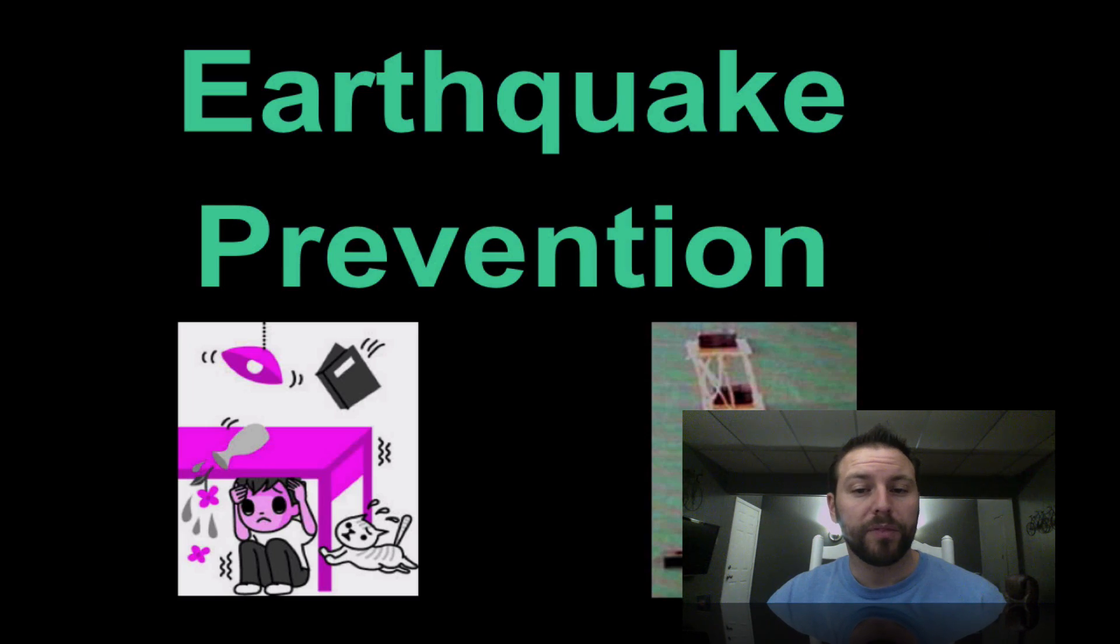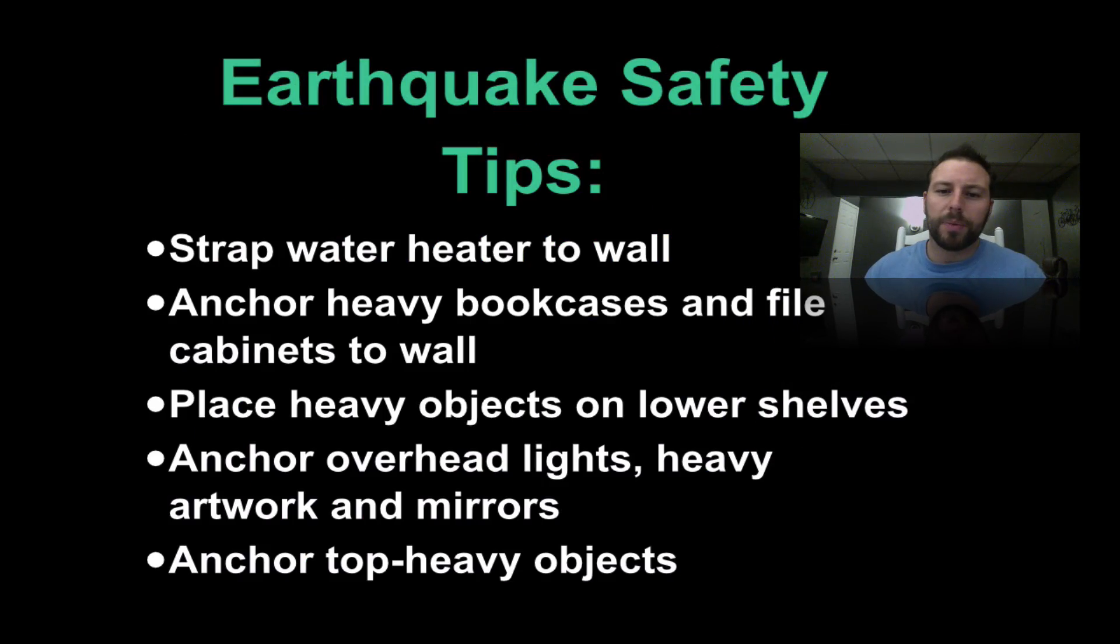Some tips. Strap hot water heater to the wall. You don't want that tipping over, burning anyone. Anchor heavy bookcases and file cabinets to the wall. If you look on the back of a bookcase, you'll see these little metal tabs. Those are usually meant to screw into a wall so they don't fall over. Place heavy objects on lower shelves. You don't want them falling on you. Anchor overhead lights, heavy artworks and mirrors, and anchor top heavy objects.